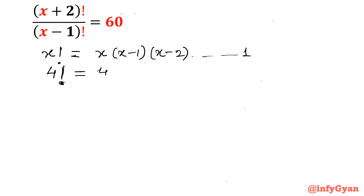So 4! = 4 × 3 × 2 × 1, and your 4 factorial value will be 24.